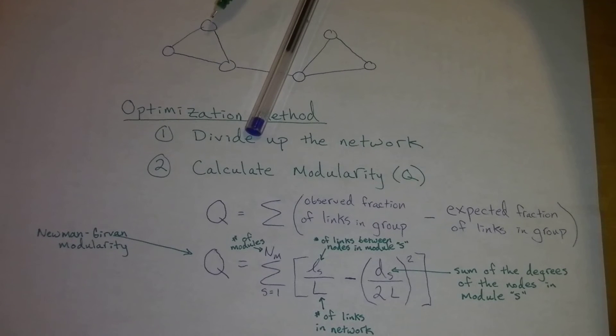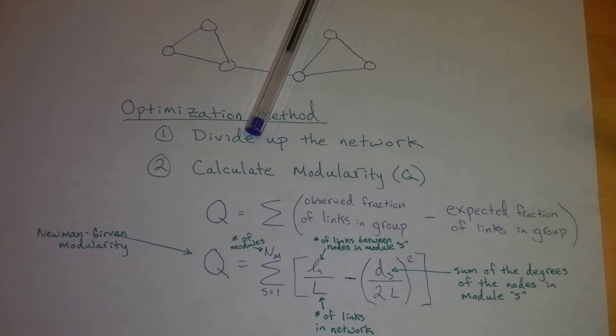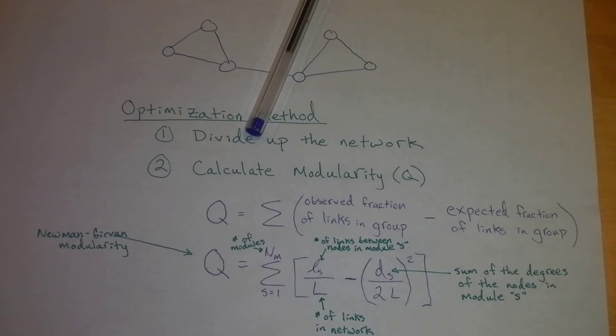For example, this node right here has a degree of two because it has two links. So we sum up the degrees for this module: one, two, three, four, five, six, seven. This node has three particular links. So we'd have a value of seven divided by two times the total number of links in the network squared. And that's going to give us an approximation of the expected fraction of links in the group.